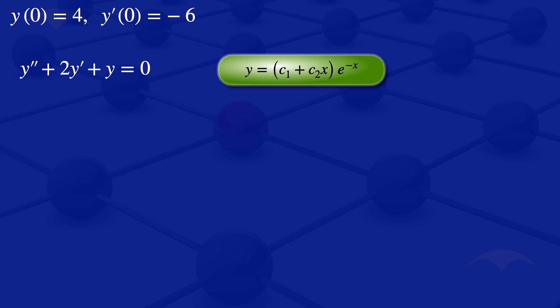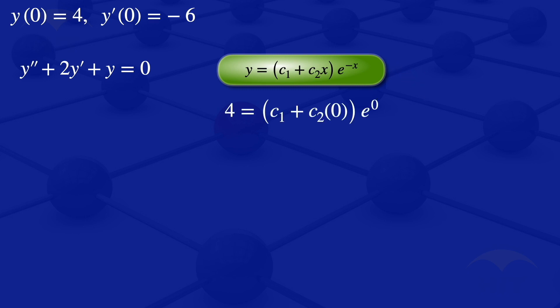Now we use the initial conditions to find constants c1 and c2. The first condition says y(0) equals 4, meaning when x equals 0, y equals 4. Substituting into our equation, we get 4 equals (c1 plus c2 times 0) multiplied by e^0.